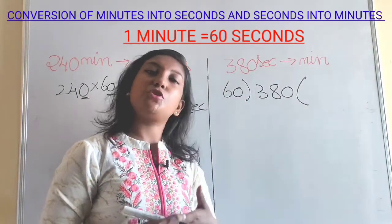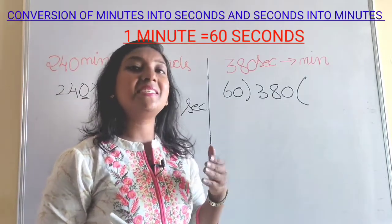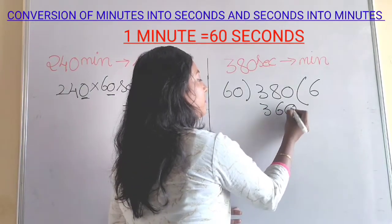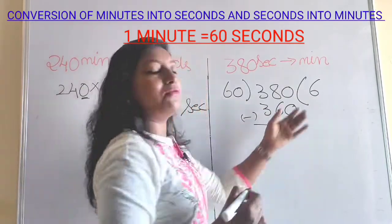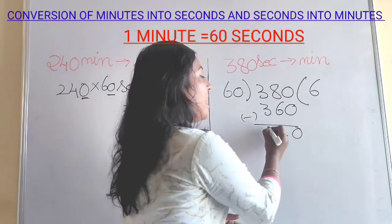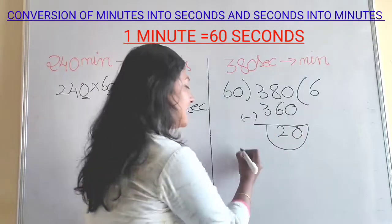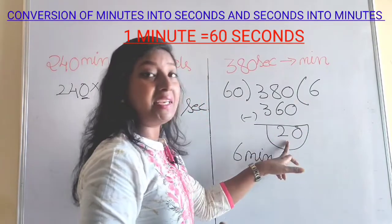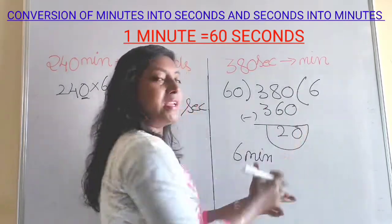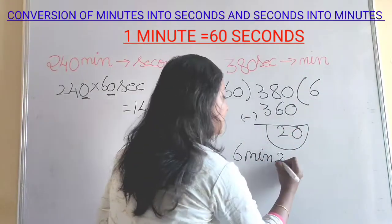Dividing 380 by 60: counting up — 60, 120, 180, 240, 300, 360 — so 60 goes 6 times giving 360. Subtracting: 380 minus 360 gives a remainder of 20. So we get a remainder because we cannot continue the division further. The quotient is 6 minutes and the remainder is 20 seconds. So the answer is 6 minutes and 20 seconds.